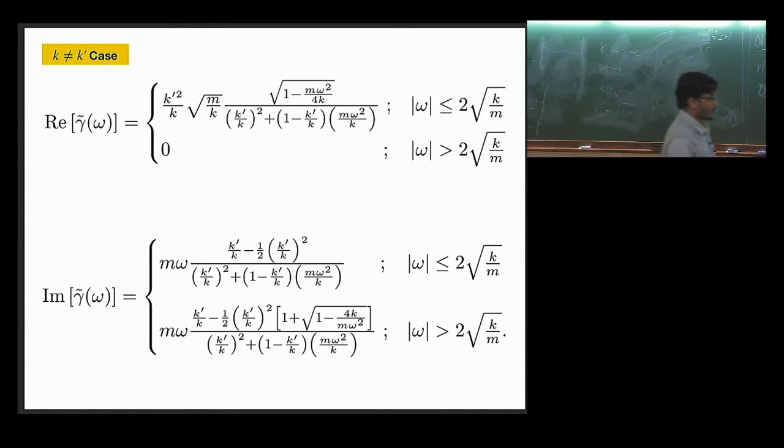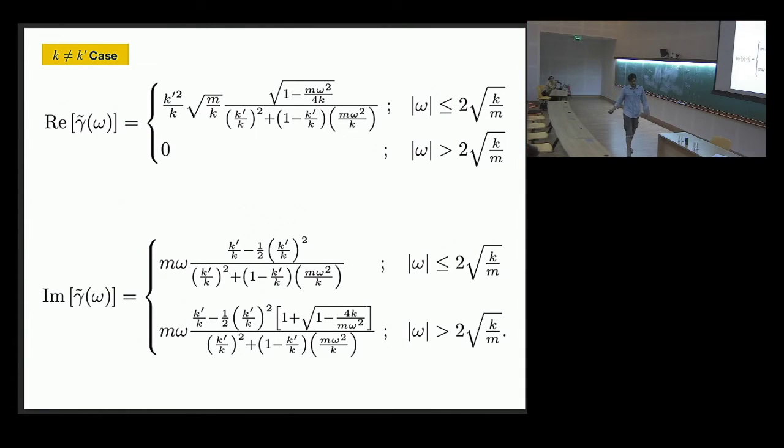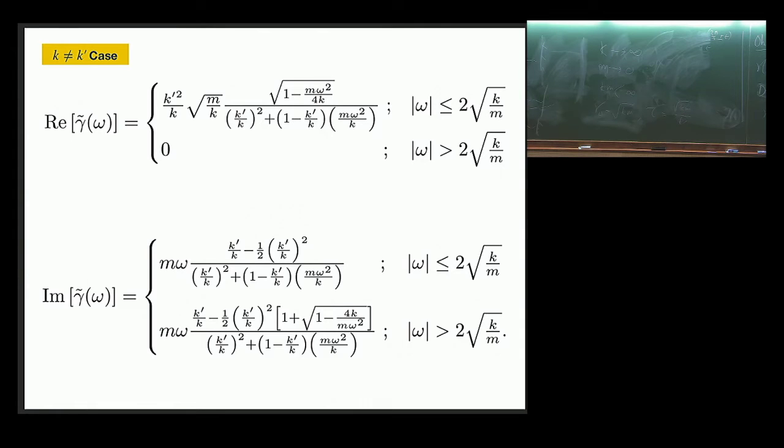So now if we look at other quantities of interest, for example the mean square displacement or velocity autocorrelation and other response function, everything. So how does that look?